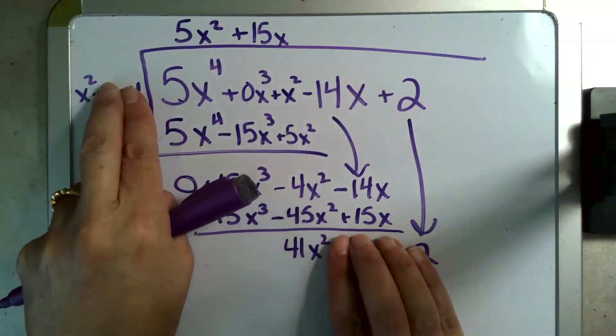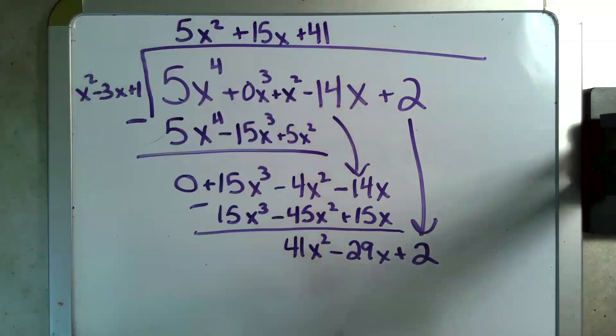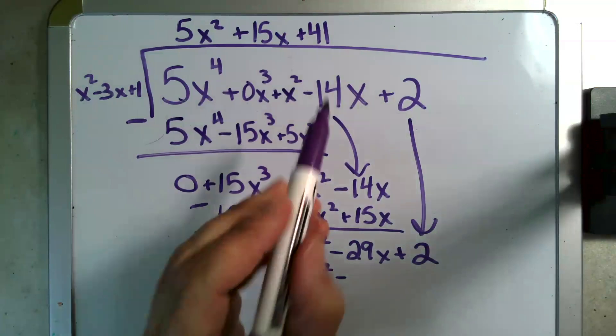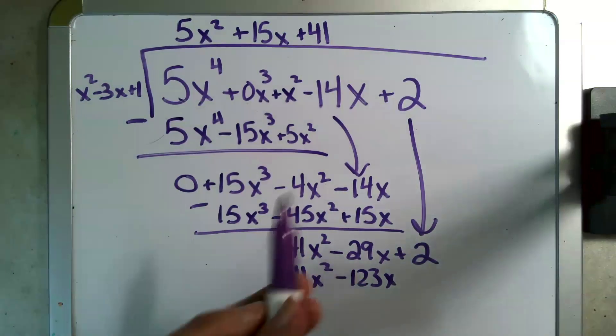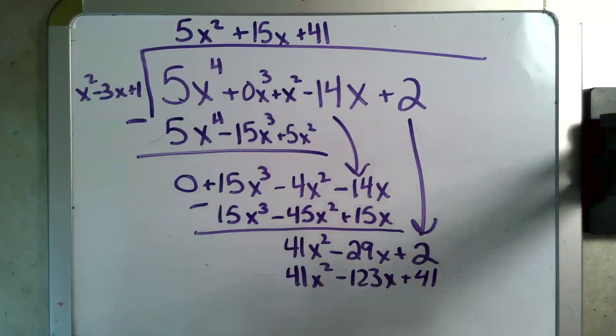What do I multiply x squared by to get 41x squared? That's right, 41. Multiply through. 41 times x squared is 41x squared. 41 times negative 3x is minus 123x. 41 times positive 1 is plus 41. Finally subtract.